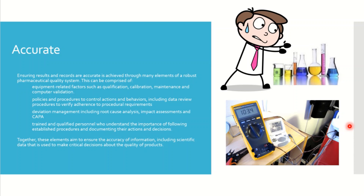For example, when recording data from a weighing machine, you should be trained and know which occasions require following rounding rules and what your procedure says. If you are preparing chemicals and don't follow the accurate weighing instructed in the document, you can end up with a faulty chemical analysis. That is the importance of accuracy.